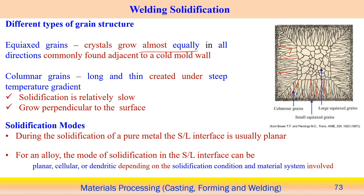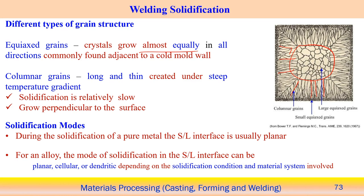Once columnar grains form, when we reach exactly the middle position, the heat is extracted at almost the same time, so solidification occurs almost simultaneously. In that case, when so many nucleations occur at different positions, we find the equiaxed kind of structure usually forms. Columnar grains are usually long and very thin, created on a steep temperature gradient. The solidification is relatively slow and growth perpendicular to the surface usually occurs. That is the typical characteristic of the solidification behavior.